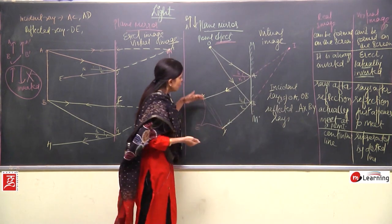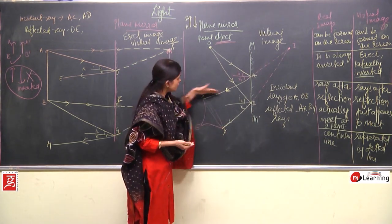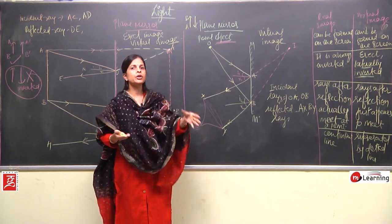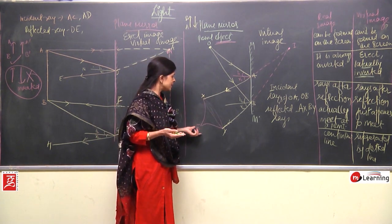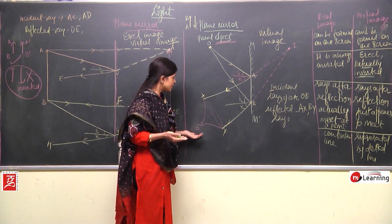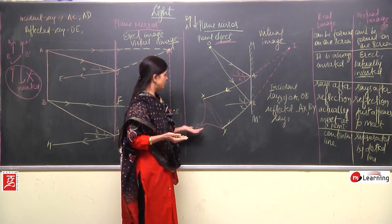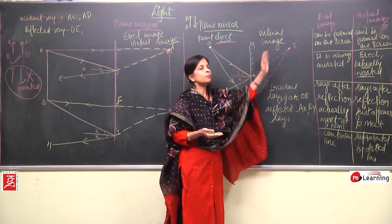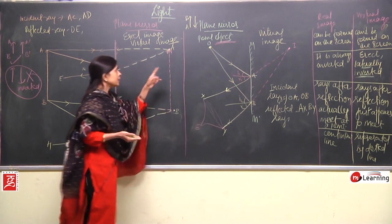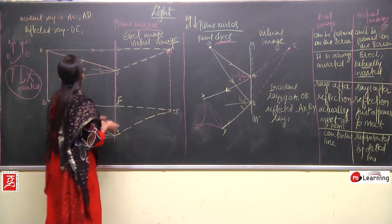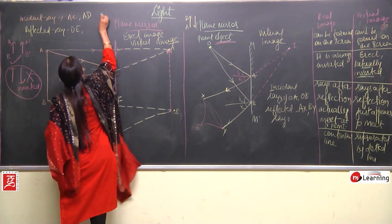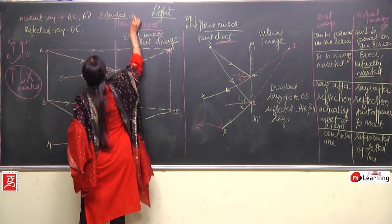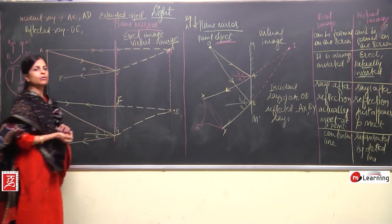Real image is not formed because these two reflected rays are diverging — they are going apart from each other, so there is no point where they actually meet. When a person sees from point E, they feel like these rays are coming from point I behind the mirror. Now, moving to the extended object example.